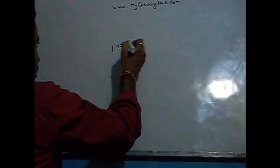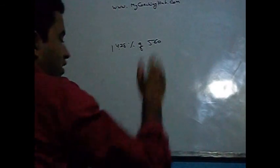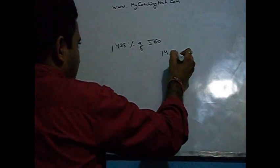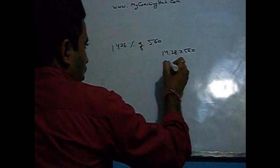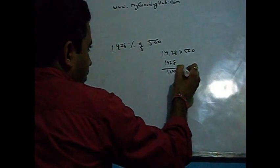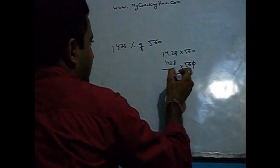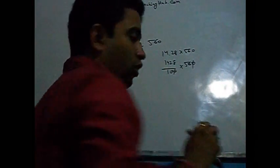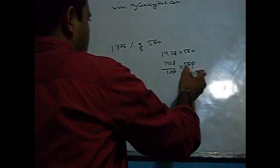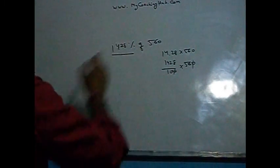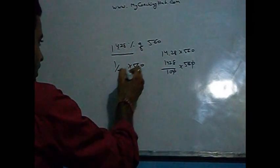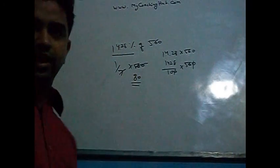Find 14.28% of 560. If we calculate it in a normal manner, we will write 14.28 × 560, then cancel and do calculations. But this is not how you need to find it out. We know that 14.28% means 1/7 of 560, so you get 80 as the answer.